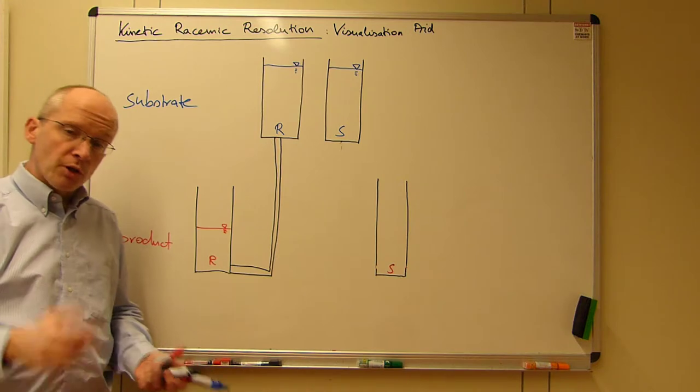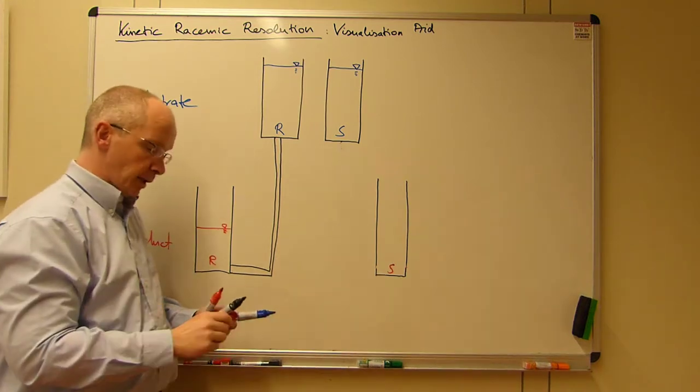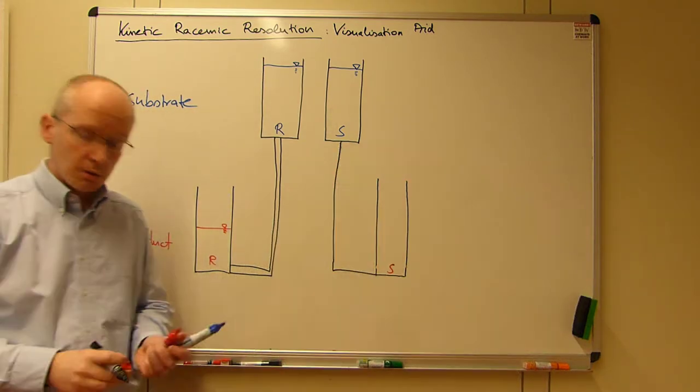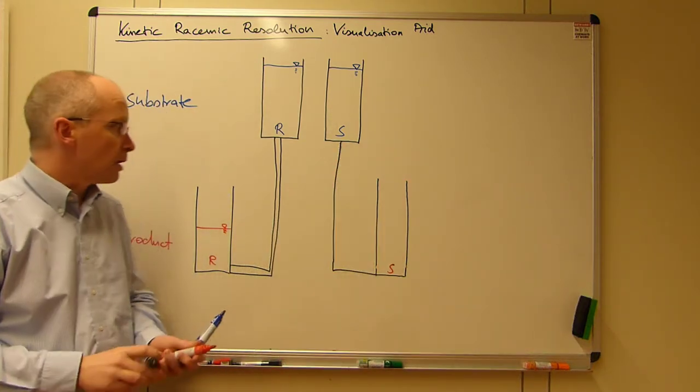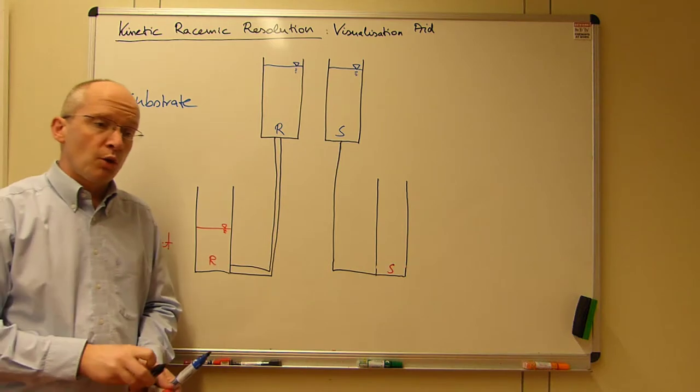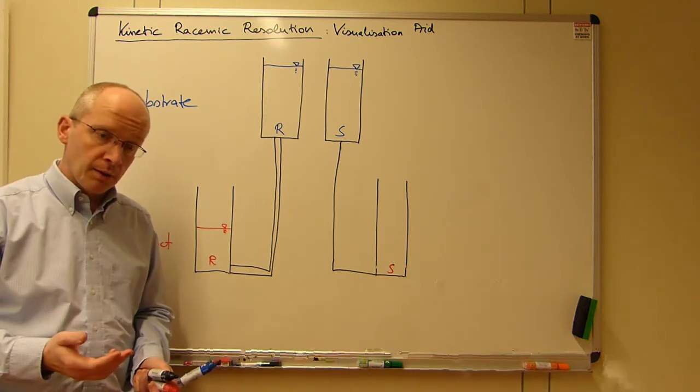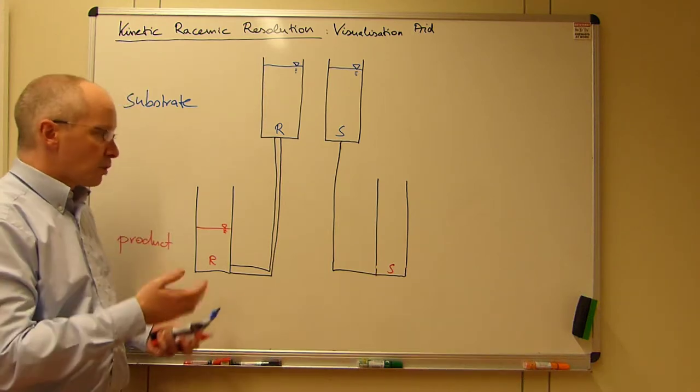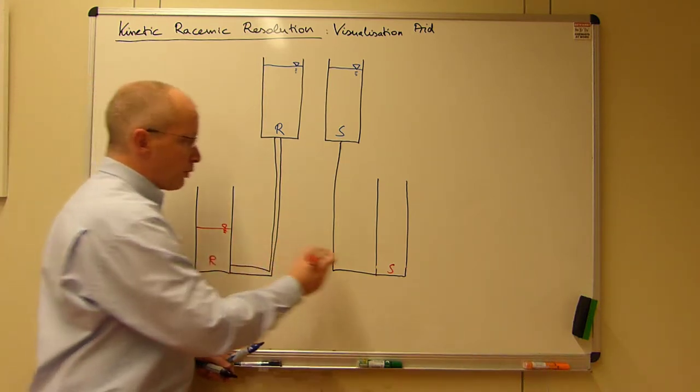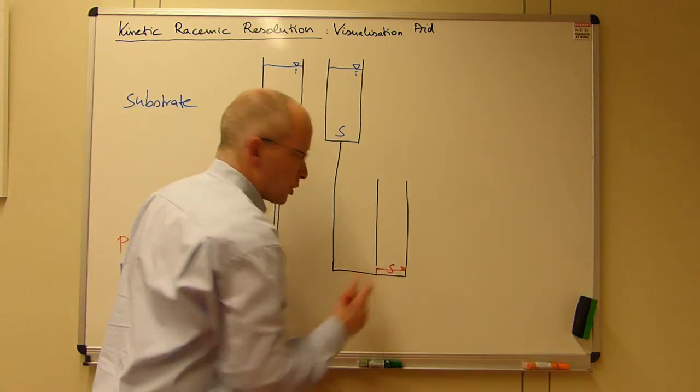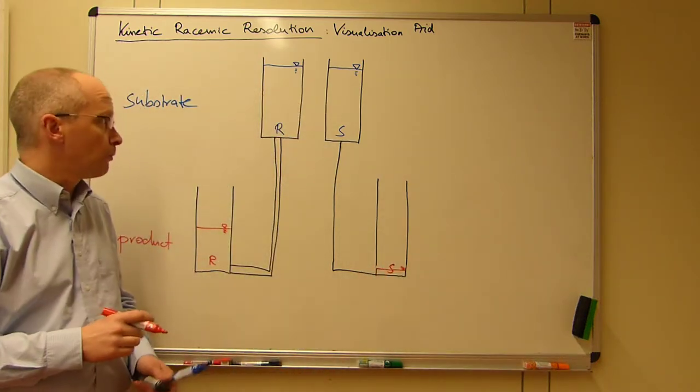Right. Let's return to the intermediate case again. And what is also hard to see sometimes is that there will be a point where you can recover an enantiomerically pure product, but you will never get it. Whatever you do, there will always be a drainage here.